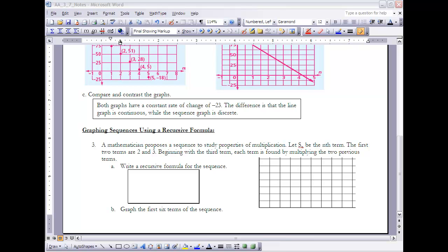Finally, let's take a look at Example 3. It says: A mathematician proposes a sequence to study properties of multiplication. Let s_n be the nth term. The first two terms are 2 and 3. Beginning with the third term, each term is found by multiplying the two previous terms together.